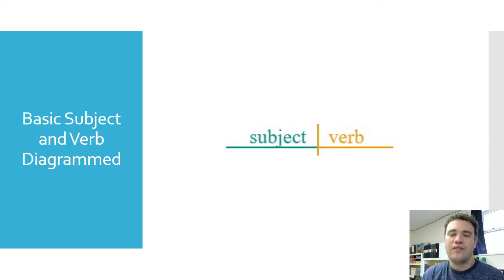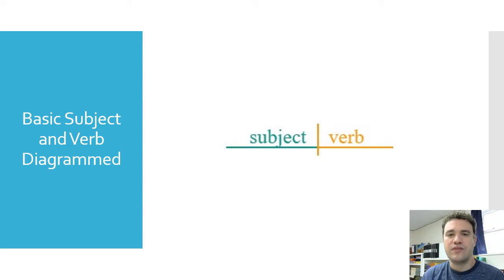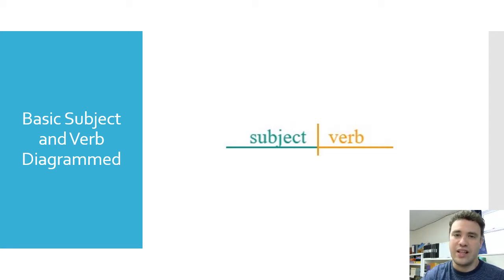A few quick slides of review on diagramming subjects and verbs. When diagramming a basic subject and verb — one subject and one verb — it's very simple. You draw a horizontal line, then a vertical line dividing it, and in front of the vertical line you put the subject and after the vertical line you put the verb. We can see that here.